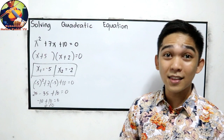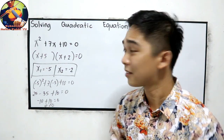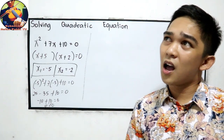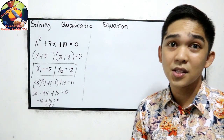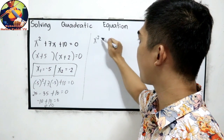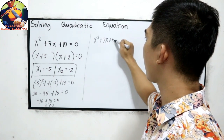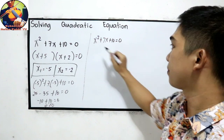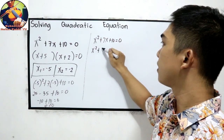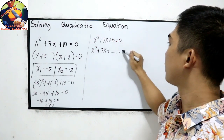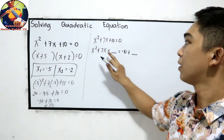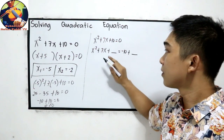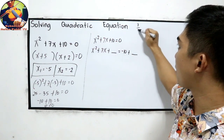Can we use completing the square? Let's check. Starting with x squared plus 7x plus 10 equals 0, our first step is to transpose: x squared plus 7x plus blank equals negative 10 plus blank. The value of the third term is found by taking 7 divided by 2, then squaring it.